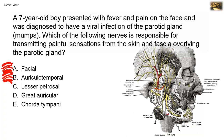The auriculotemporal nerve does not supply the skin or fascia over the parotid gland. In addition, it carries secretomotor fibers from the otic ganglion, which is connected to the mandibular nerve. These parasympathetic fibers supply the parotid gland with secretomotor fibers, but they are not sensory. So the auriculotemporal nerve is not involved in transmitting painful sensations from the skin and fascia over the parotid gland.